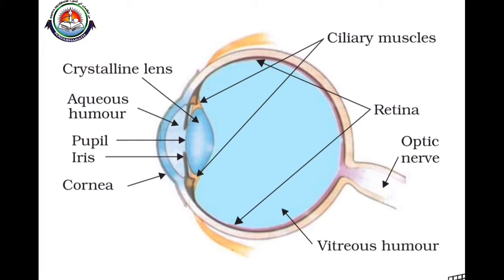The ciliary muscles modify the curvature and focus of the eye lens, and hold the eye lens in position.